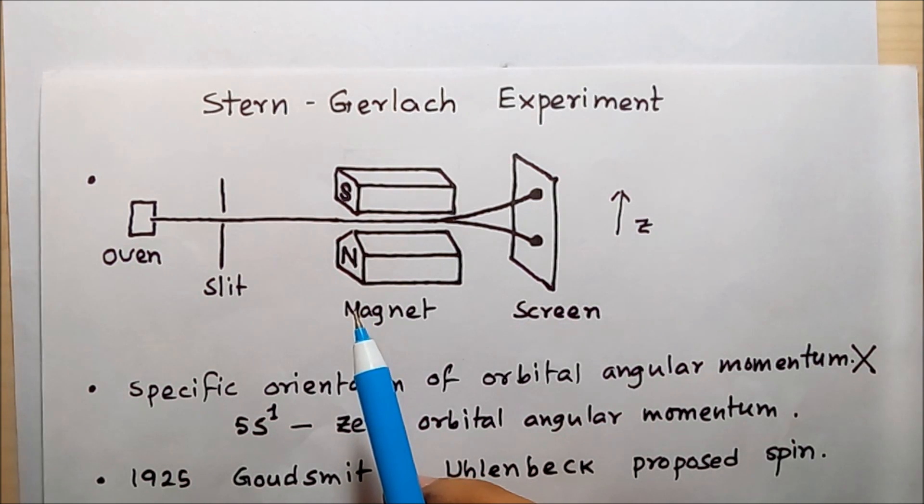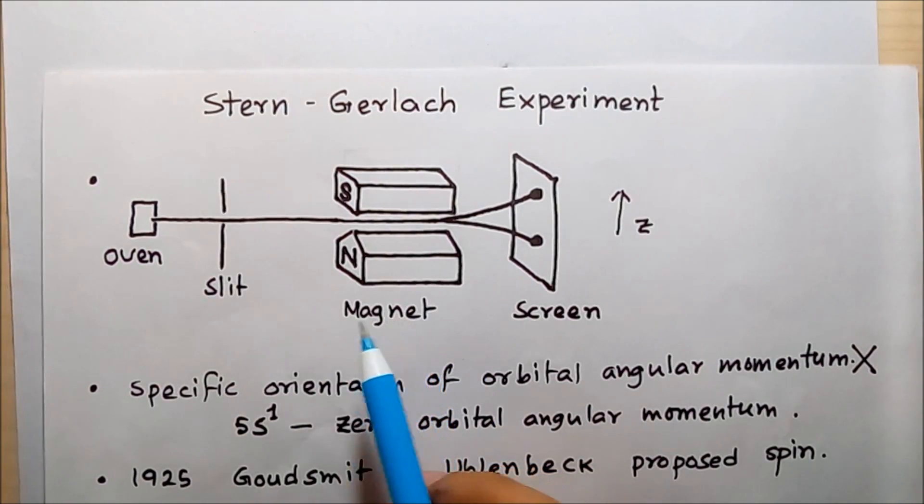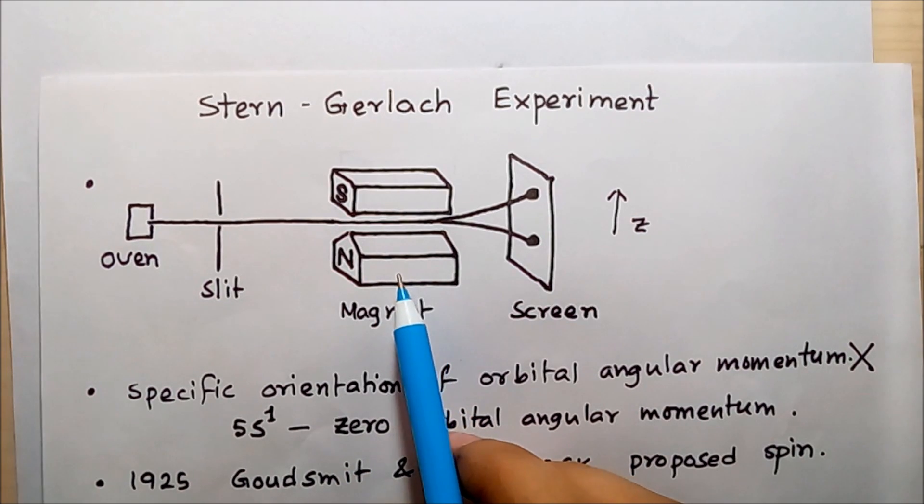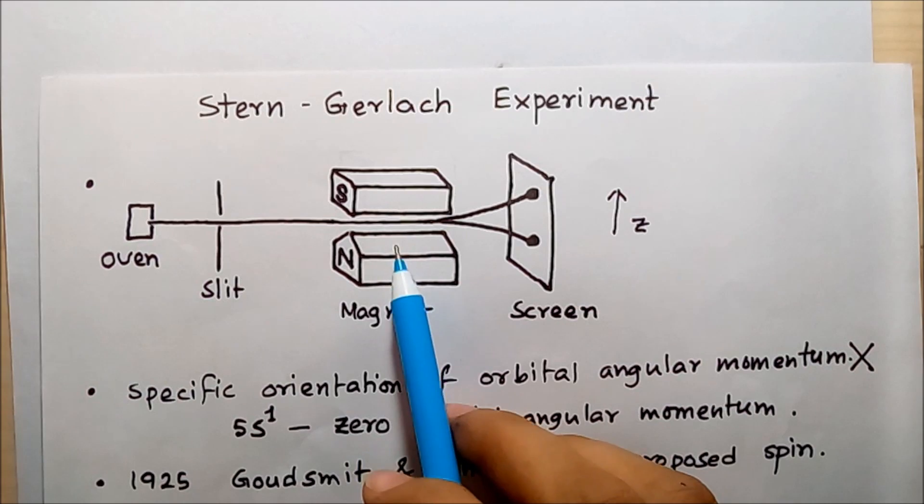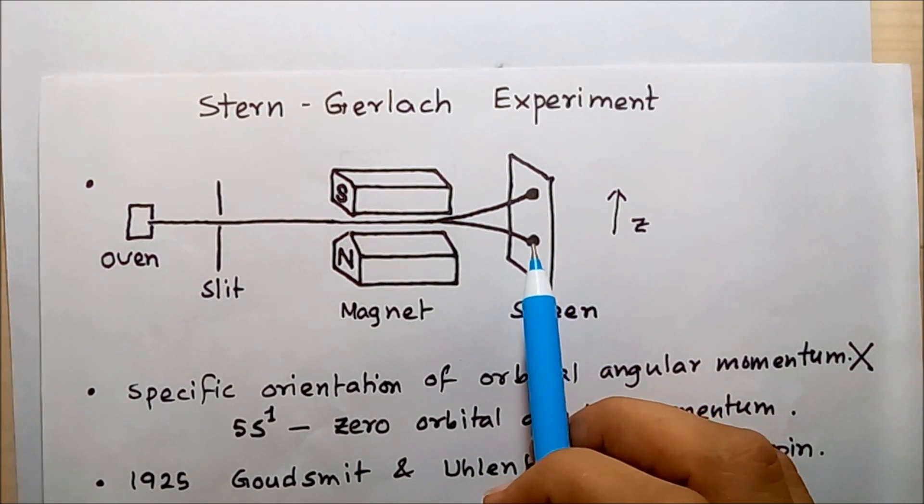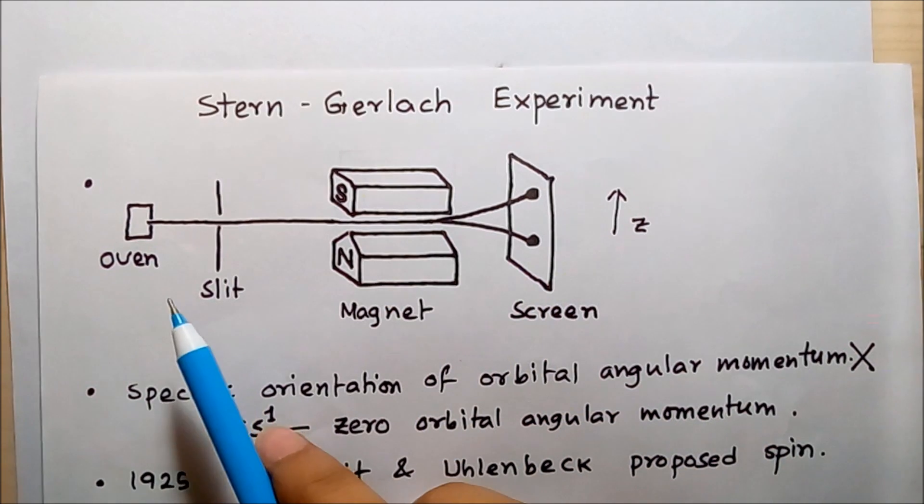This is also direct proof of the phenomenon of space quantization. This is the Stern-Gerlach apparatus: an oven, a collimated slit, a magnet specially designed to produce an inhomogeneous magnetic field along the Z-axis, and a screen.